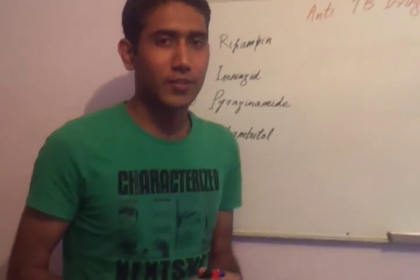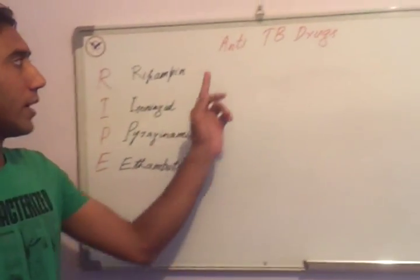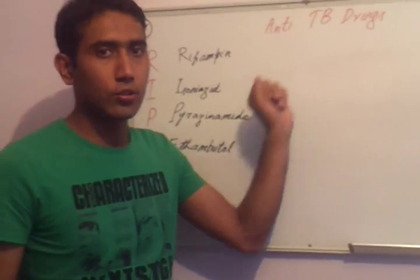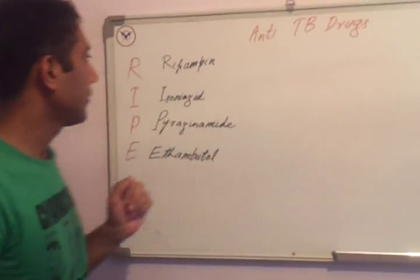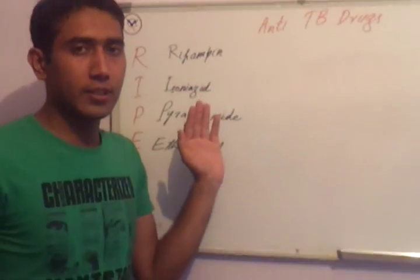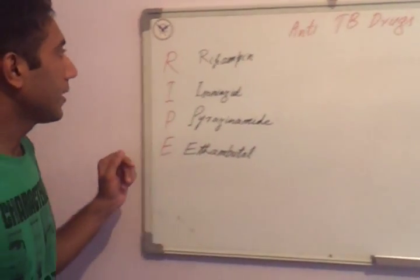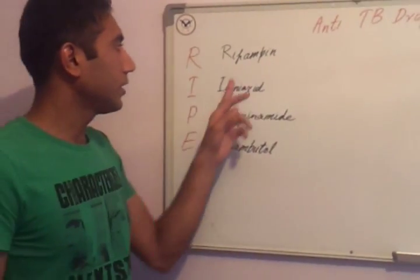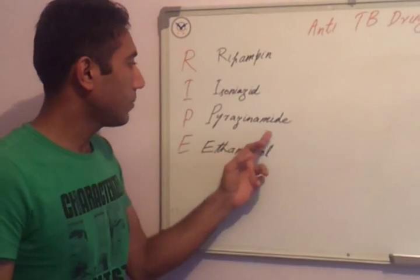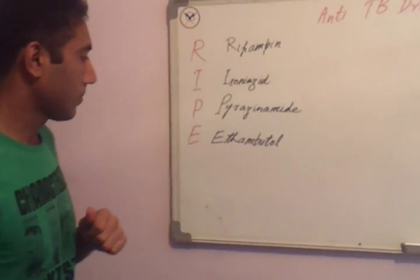Dr. Vokas. I will explain anti-TB drugs — drugs used for tuberculosis treatment. Four drugs are used as first-line therapy for the treatment of tuberculosis: rifampin, isoniazid, pyrazinamide, and ethambutol.